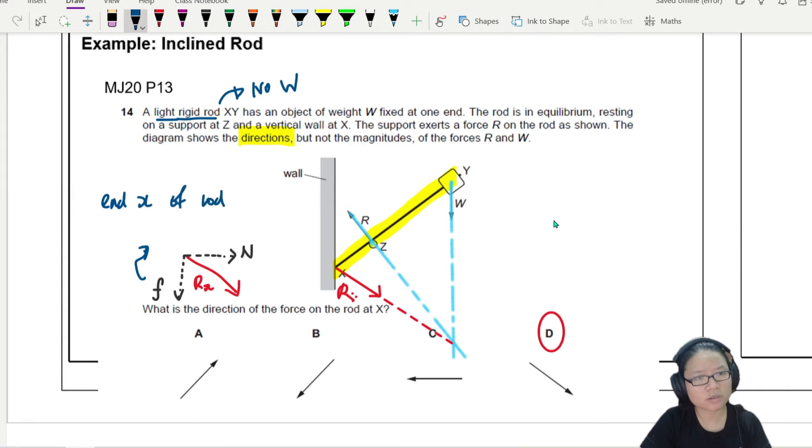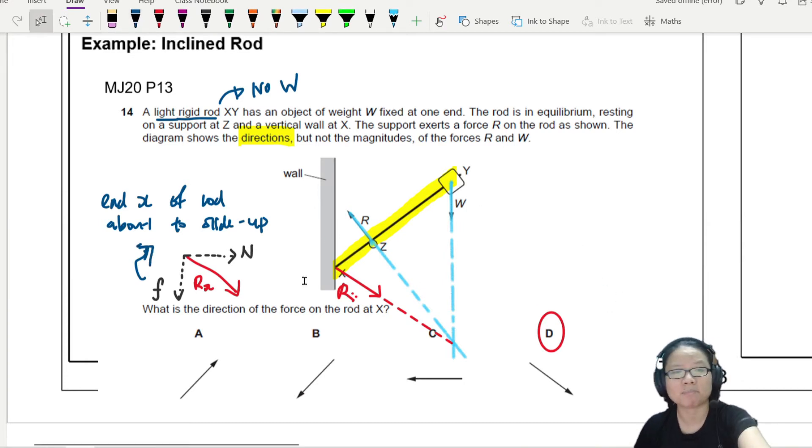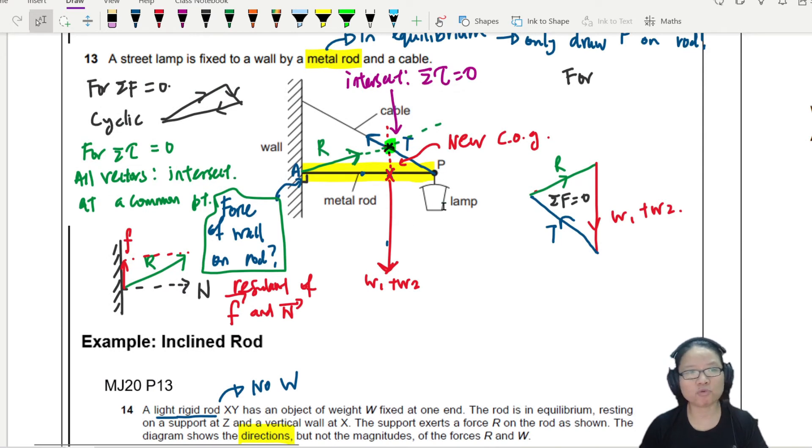You don't need to know this, but this is why the direction of R will change. Sometimes the rod will be sliding up because W is providing that clockwise moment. Imagine the system is like this and then you pull on - am I pushing in the right direction? Yes, you pull on this side so the other side will slide up. Pull down on W, this side will slide up.